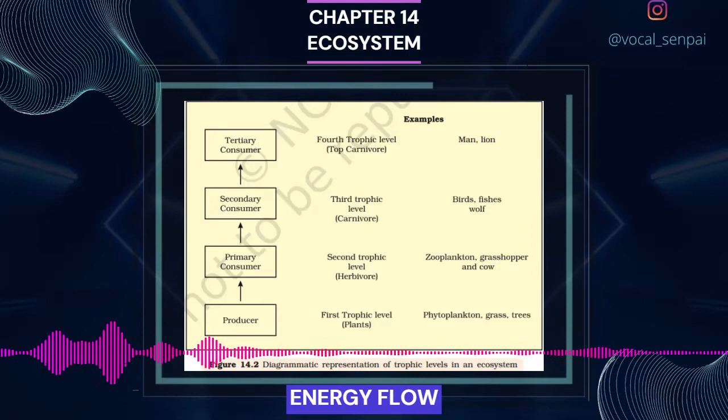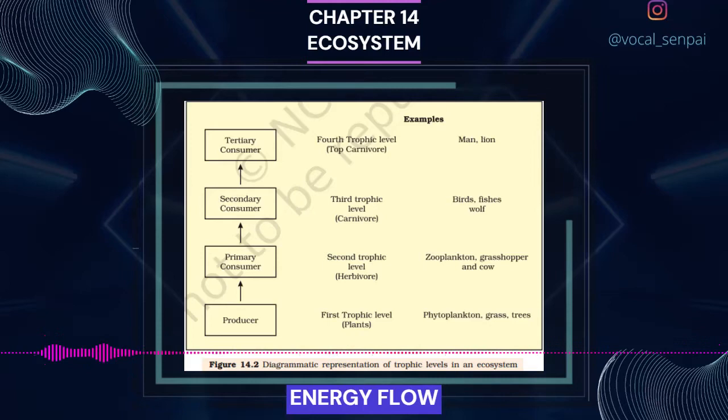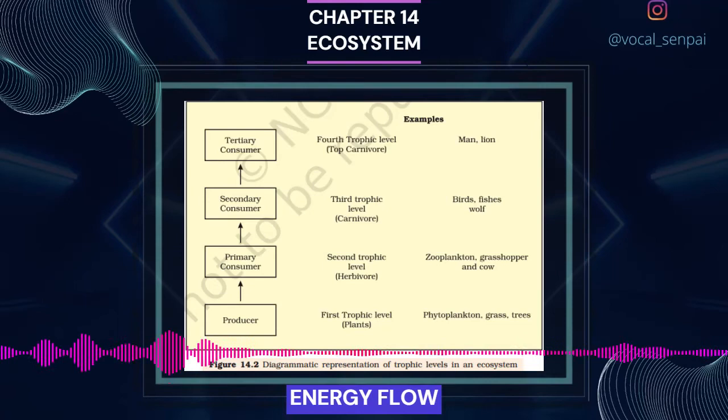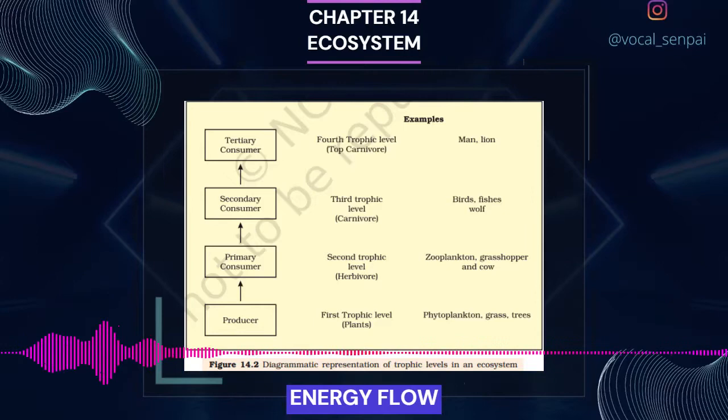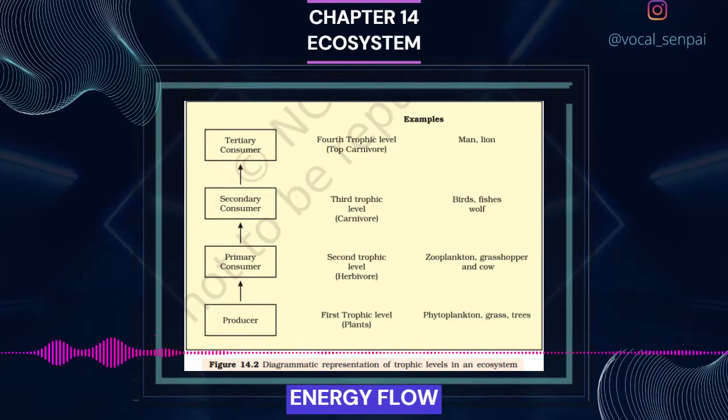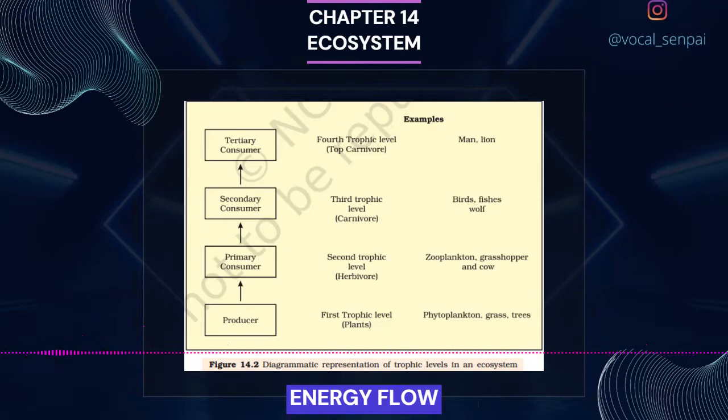Detritus food chain may be connected with the grazing food chain at some levels. Some of the organisms of DFC are prey to the GFC animals, and in a natural ecosystem, some animals like cockroaches, crows, etc. are omnivores. These natural interconnections of food chains make it a food web. Organisms occupy a place in the natural surroundings or in a community according to their feeding relationship with other organisms. Based on the source of their nutrition or food, organisms occupy a specific place in the food chain that is known as their trophic level.